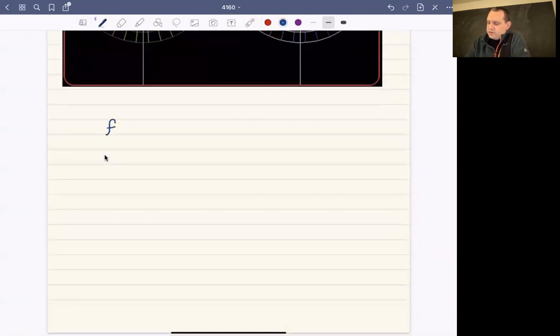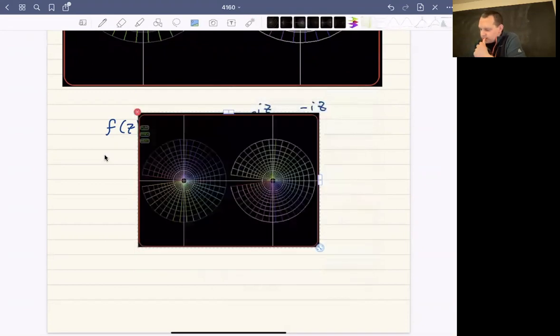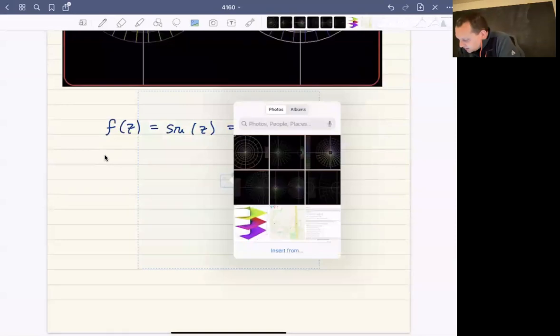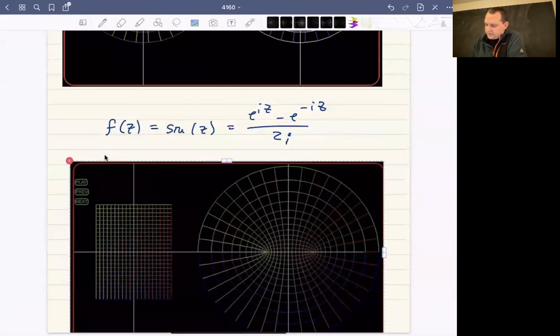The last picture, and I don't have too much more to say about this, is f of z is sine of z. Remember sine of z you can write as e to the i z minus e to the minus i z over 2i. And so this is going to be the picture. Let's see, make sure I pick out the right one. I think this one. No. These icons are too small for my eyes here. This one. Okay.